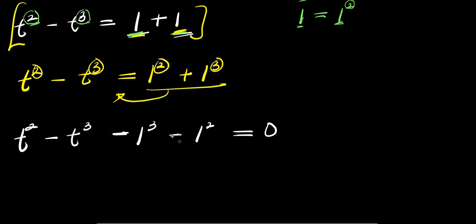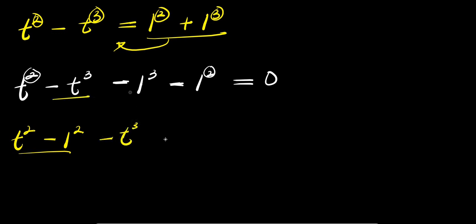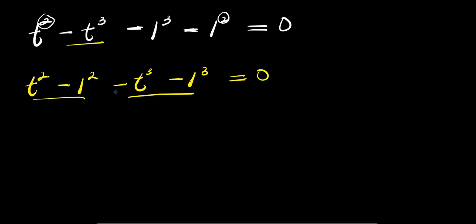There's a minus on both terms, so I can collect terms with the same powers. Power 2 terms together and power 3 terms together: (t² − 1²) minus (t³ + 1³) equals 0. I factor out the minus from the second group, giving t² − 1² minus (t³ + 1³) equals 0.